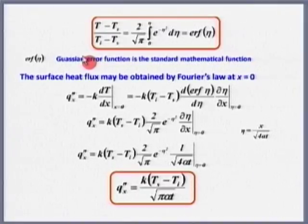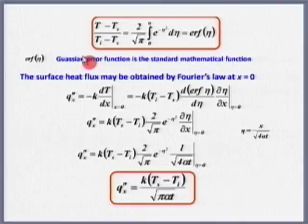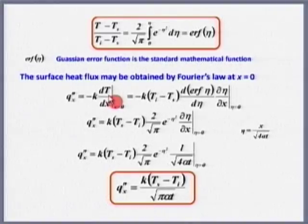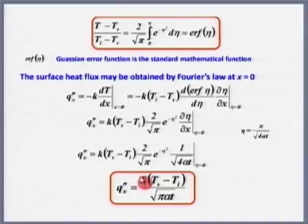The solution is in the form of an error function, and the heat flux is obtained just as we did for fins — once I get the temperature distribution, a simple differentiation gives the heat flux. Our aim has always been to get the temperature distribution first, because −k dT/dx at x=0 gives the heat flux at that location.